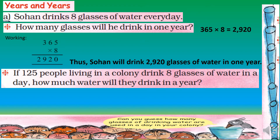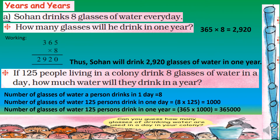Next question: If 125 people living in a colony each drink 8 glasses of water in a day, how much water will they drink in a year? The number of glasses 125 persons drink in one day is 8 multiplied by 125, which equals 1000 glasses. For one year that is 365 days. You can also find out how many glasses are used in a day in your own colony.